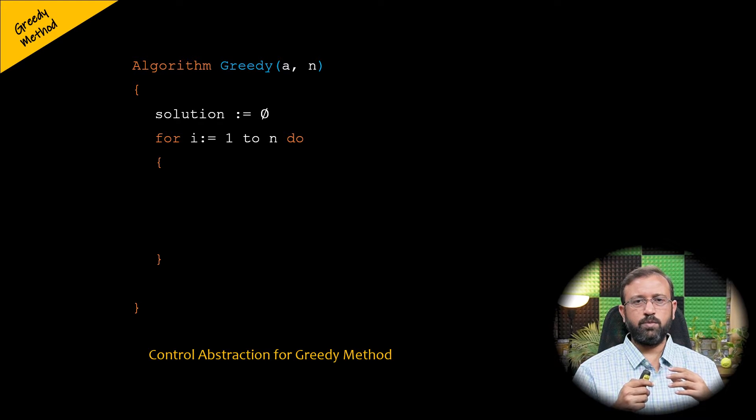Within this for loop we will select the input using the selection function. The select function selects the input and removes the input from array a and assigns the input to variable x. Variable x will be storing the selected input.